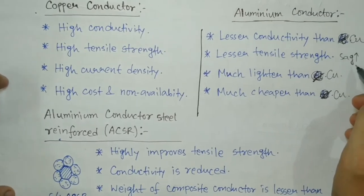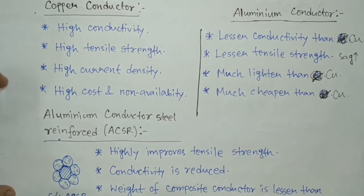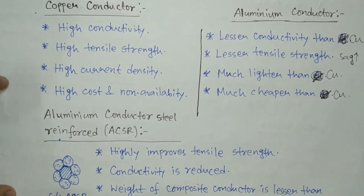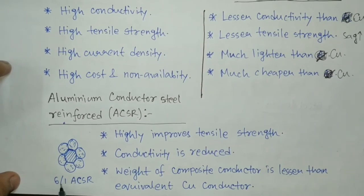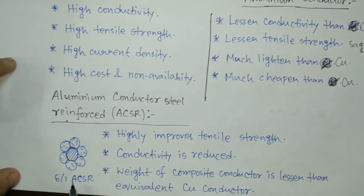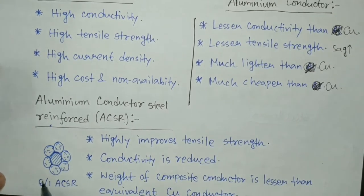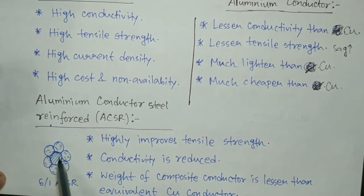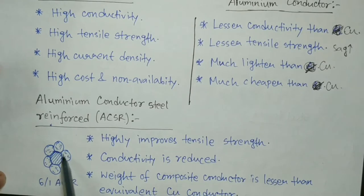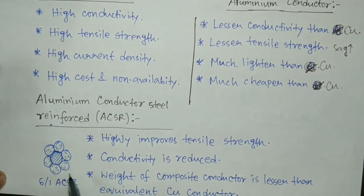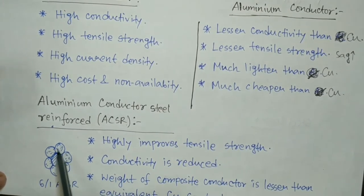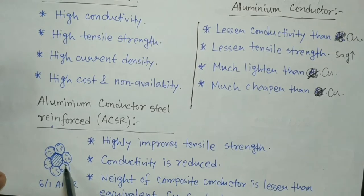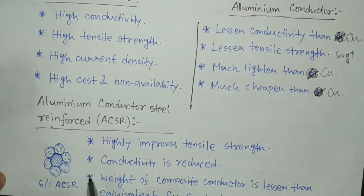This conductor looks like this — it is called a 6×1 ACSR conductor. It means there are 6 aluminium conductors and one steel conductor at the center. The 6 aluminium conductors surround the steel conductor which is right at the center. This structure gives very good tensile strength.